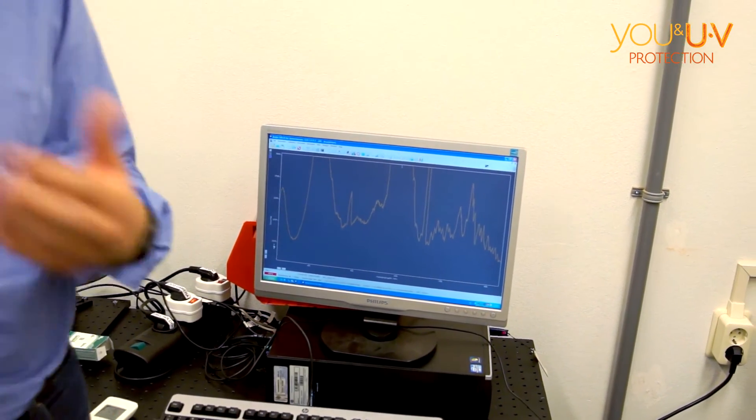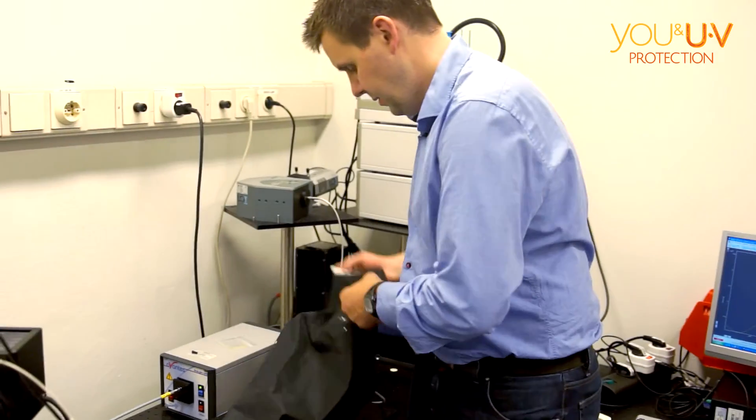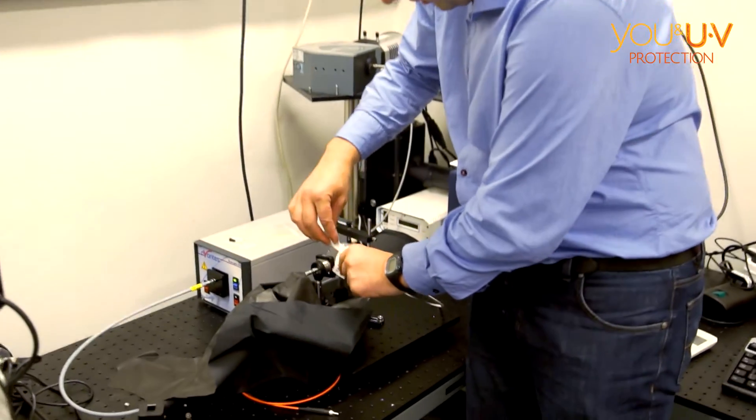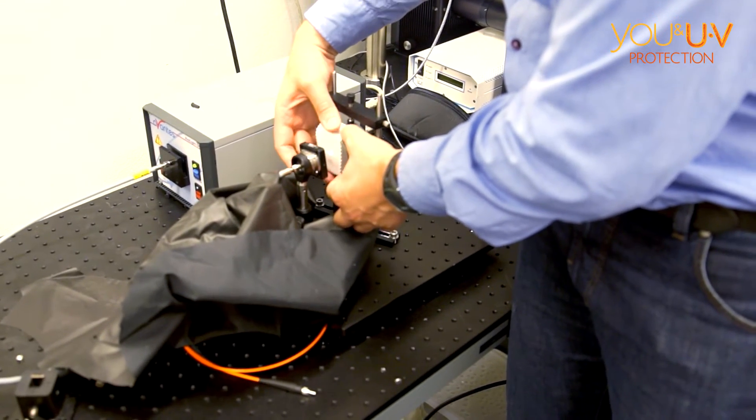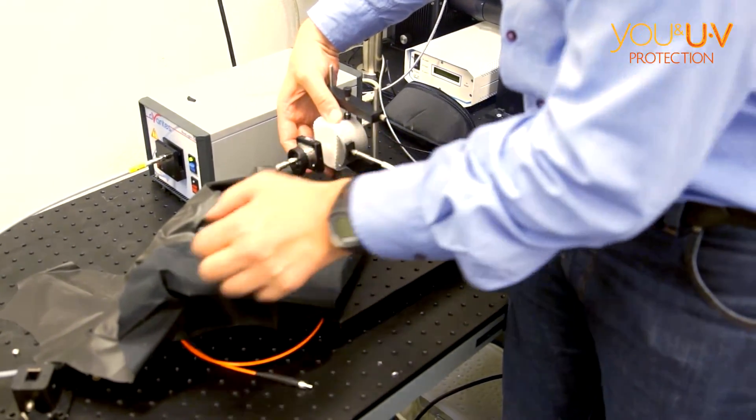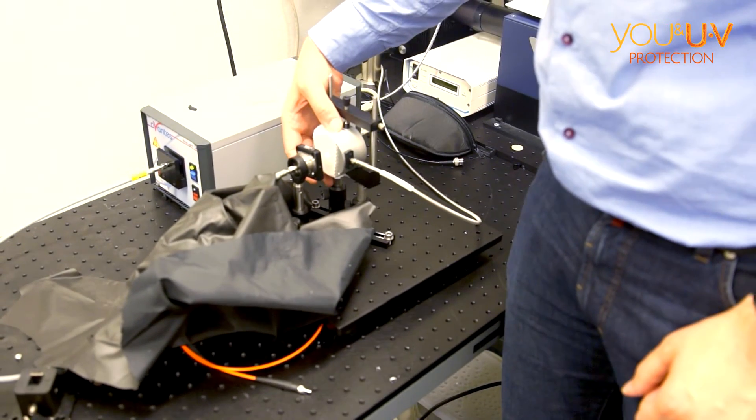It takes a while for the deuterium lamp to warm up. We put the cloth in the way of the beam, and we want to pin it down quite close. It's handier when it's horizontal, you can pin it.